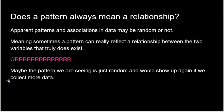The last big idea for this topic — and really for the whole course — is: does a pattern always mean a relationship? Just because you see a pattern in numbers, does it mean a relationship exists? Apparent patterns and associations in data may be random. Sometimes a pattern really does reflect a true relationship between two variables, where variable A truly impacts variable B. Or maybe we're seeing a pattern that is really just random — we think we see something, but it's pure random chaos.